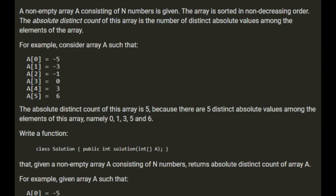A non-empty array A consisting of N numbers is given. The array is sorted in non-decreasing order. The absolute distinct count of this array is the number of distinct absolute values among the elements of the array. For example, consider this array — the absolute distinct count is 5 because there are 5 distinct absolute values: namely 0, 1, 3, 5 and 6.